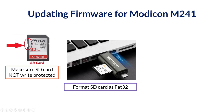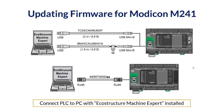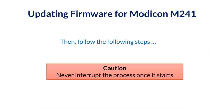If you don't have a built-in socket, you can use an SD card reader with a USB port to format the SD card. After formatting, insert the SD card into the PLC to start the firmware update process. Then connect the PLC to the computer which has the programming software installed. For the Modicon M241, we need EcoStruxure Machine Expert, software developed by Schneider Electric. The connection can be made using Ethernet cables or USB cables, depending on your PLC version and available ports.